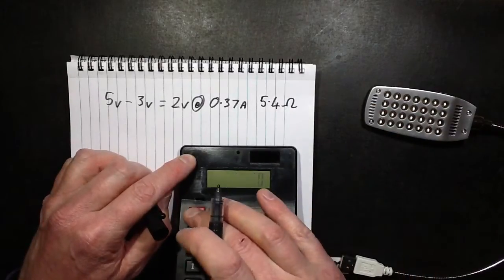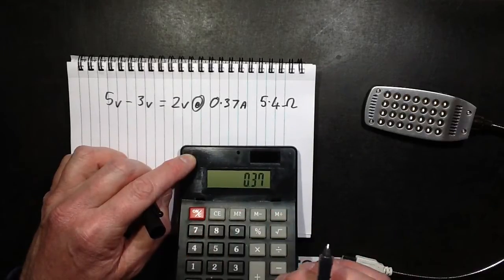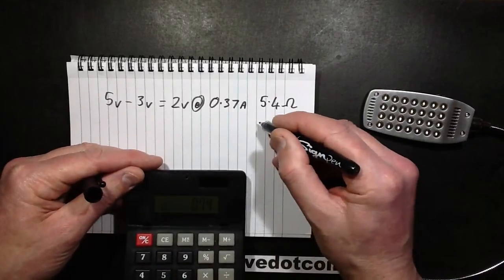And the power dissipation will be 2 volts dropped times 0.37 amps, so it'll be dropping about 750 milliwatts.